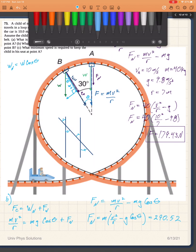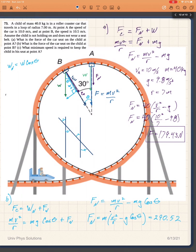So for part C, I'll just have mv squared over r is equal to the weight. So mv squared over r is equal to mg. The m's cancel out. And so the speed, the minimum speed that I would require would be...